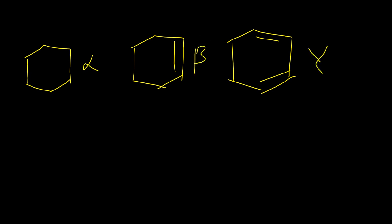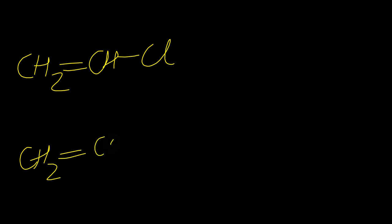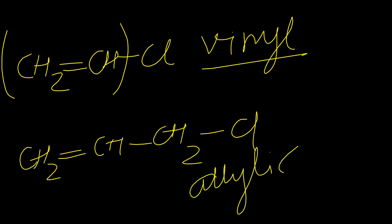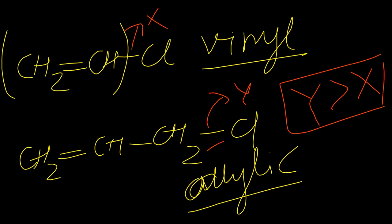For three bonds labeled alpha, beta, gamma: alpha is a pure single bond, beta is a pure double bond, and gamma involves resonance (partial double bond character). So alpha is the longest, gamma is intermediate, and beta is shortest: alpha > gamma > beta. Similarly, for vinylic chloride (CH₂=CHCl, molecule X) versus allylic chloride (CH₂=CH-CH₂Cl, molecule Y): in allylic chloride, the C-Cl bond has resonance and single bond character is more, so Y > X.